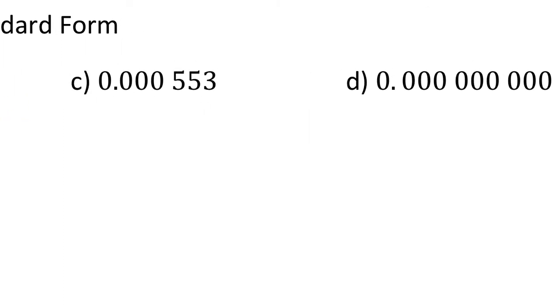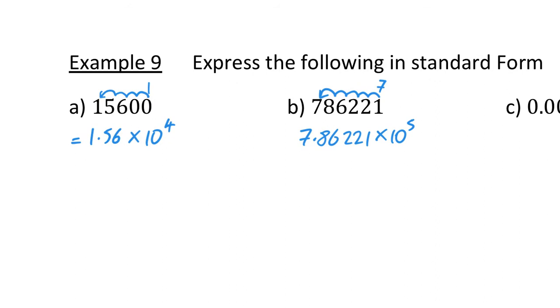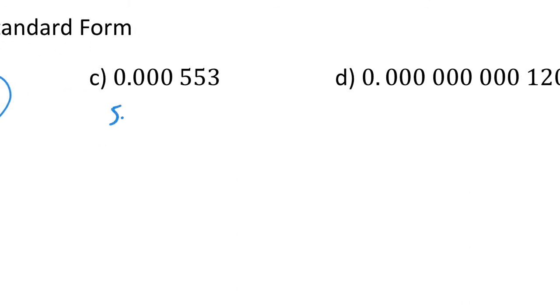Looking at the first two examples — they were big numbers, so the power is positive. These next ones are going to be small numbers, so the power is going to be negative. We're going to make it a number between 1 and 10: 5.53. Then it's always times 10, and this time the 5 needs to go back 1, 2, 3, 4 places, so that's why it's times 10 to the minus 4.